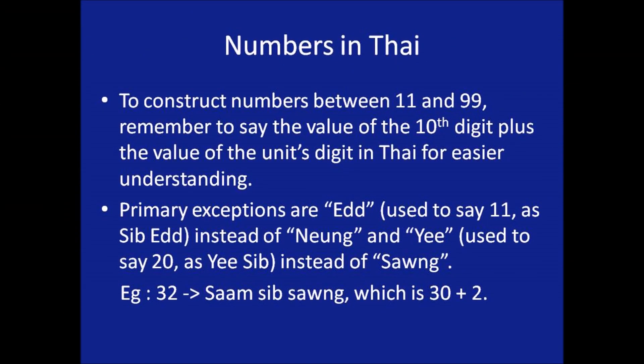We shall have more clarity on the basic rules of constructing numbers in Thai, especially those numbers between 11 and 99. It is very simple — remember to say the value of the 10th digit followed by the value of the unit's digit. However, there are some exceptions: for the number 11 and 21, a special form is used. You can check out the examples given and try making your own combinations of numbers based on the basic numbers you have already learnt.